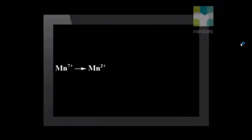Now we do exactly the same with the other half reaction. Since there is one manganese ion on each side of the arrow, we do not need to balance the number of atoms. Each manganese 7+ gains 5 electrons to become manganese 2+. Since the oxidation number decreases, this is the reduction half reaction.